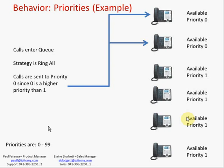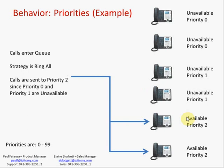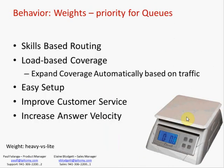Looking at how priorities work in practice: a call enters the queue with a ring-all strategy — calls are sent to priority zero first. If priority zero is unavailable, calls are sent to priority one. If both zero and one are unavailable, calls go to priority two. This operation is visible in the queue setup — in the call group, you select the member, and in our live system I'm in the customer service queue at priority one. When logged in, calls go to the primary support agents first; if they're all busy, I receive calls as expanded coverage.